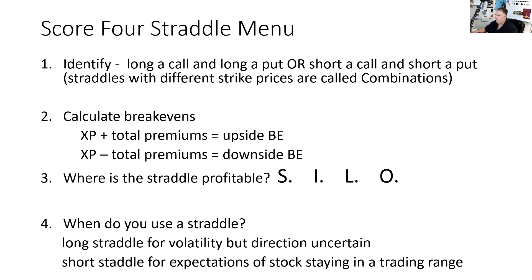The last item in our Score Four More is knowing when to use a straddle. All speculative strategies involve either buying or selling volatility. When we buy a long call, we're buying upward volatility — and we've got to be right about three things: direction, how far, and timing. Very hard to do. When we buy a put, we're buying downward volatility.